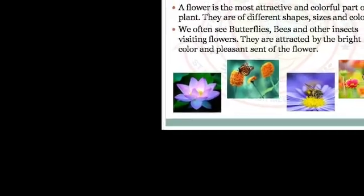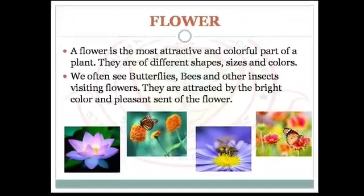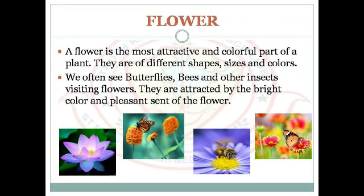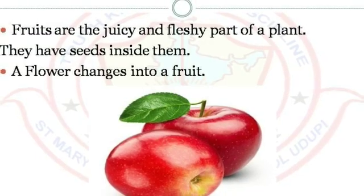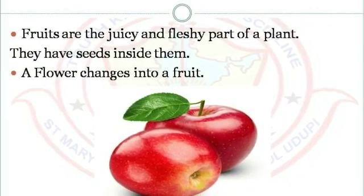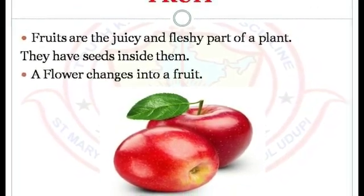A flower is the most attractive and colorful part of a plant. They come in different shapes, sizes, and colors. We often see butterflies, bees, and other insects visiting flowers — they are attracted by the bright color and pleasant scent of the flower.